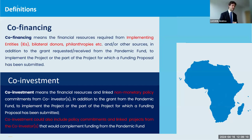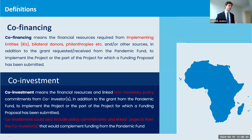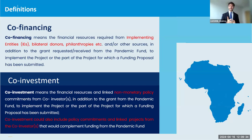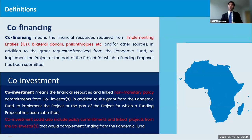In terms of co-financing, it is 100% focused on the financial resources required from implementing entities — the 13 implementing entities of which WHO and FAO are part — as well as bilateral donors, philanthropies, private sector, and any other sources that within your project can be used to complement activities not directly funded by the Pandemic Fund. So really adding on top of what the proposal is going to cover.